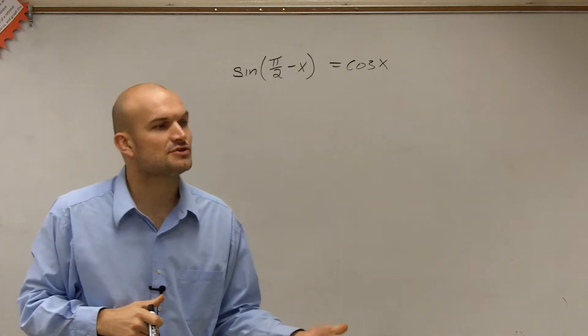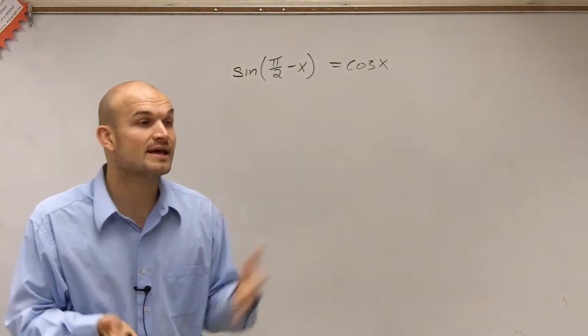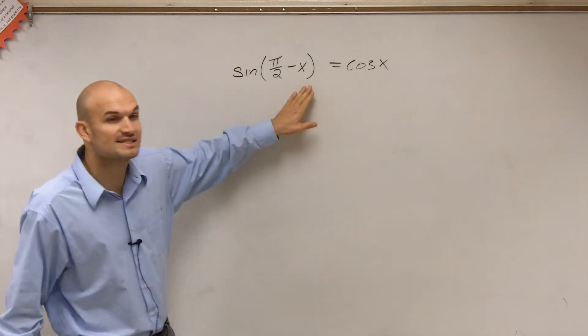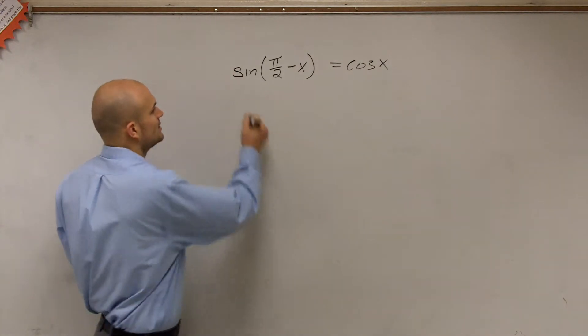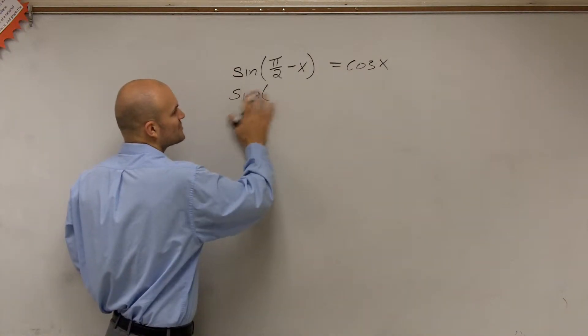But what we want to do is use the sum and difference formulas to prove or to simplify. Therefore, we can prove that's going to equal cosine of x. I look at this and have the difference of two angles. So by using the difference of the sine function, not the sum.